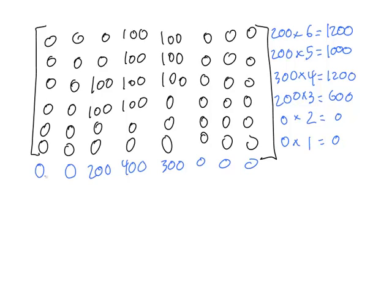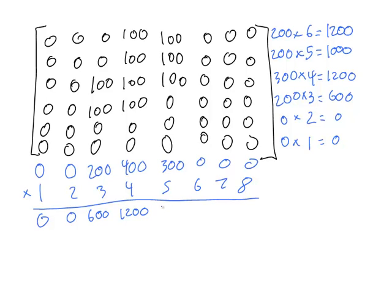And I'm going to do the same for my columns. Here, I'm going to call this column, the left most column, column 1. And I'm going to do that multiplication. So, I get 0, 0, 600, 1,200, 1,500, 0, 0, 0.